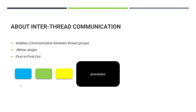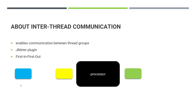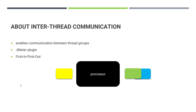Here we have a black box, some kind of processor, and we have three elements: yellow, green, and blue. Whatever goes inside gets processed and then gives you the output. In this case, the first one is green, the second is blue, and the third is yellow. But whatever happens inside the black box we are not aware of — that is where the whole implementation lies.